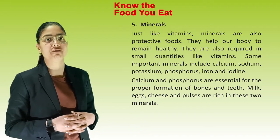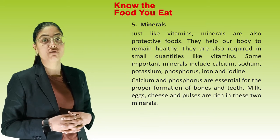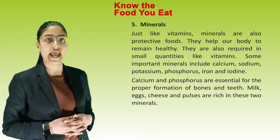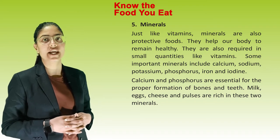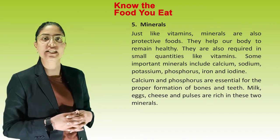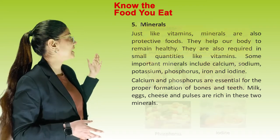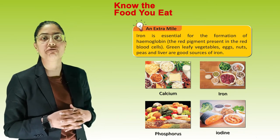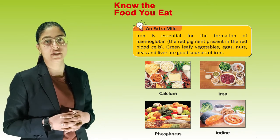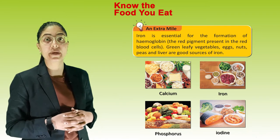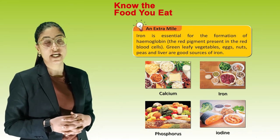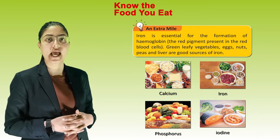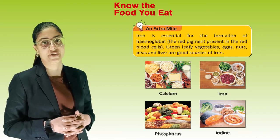Calcium and phosphorus are essential for the proper formation of bones and teeth. Milk, egg, cheese and pulses are rich in these two minerals. Iron is essential for the formation of hemoglobin, the red pigment present in the red blood cells. Green leafy vegetables, eggs, nuts, peas and liver are good sources of iron.